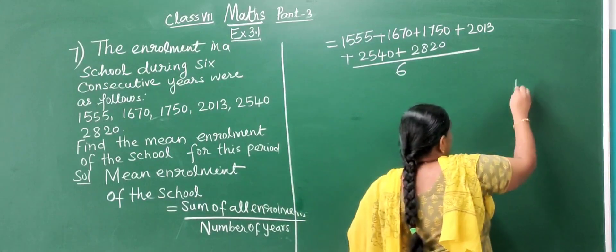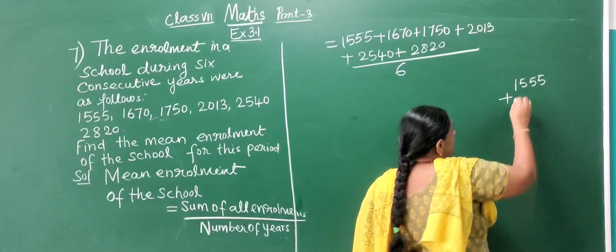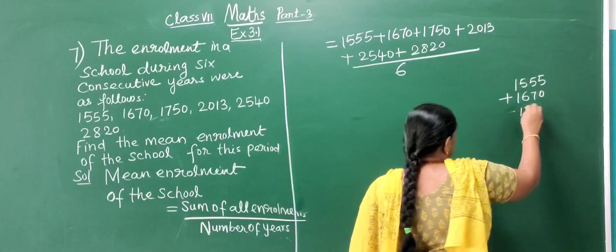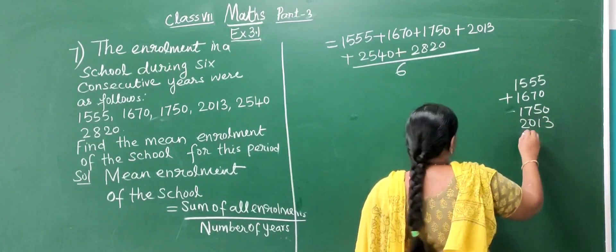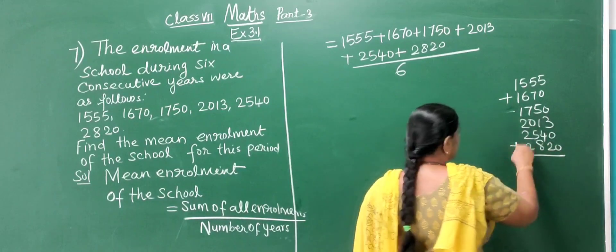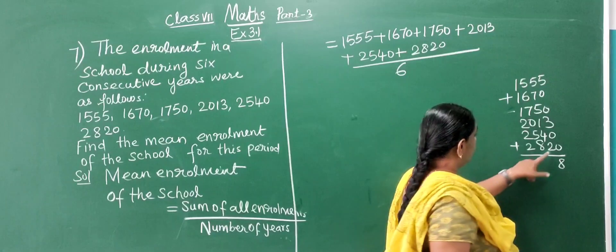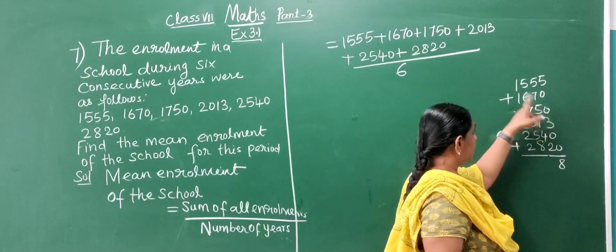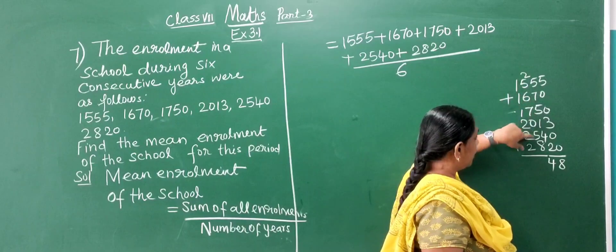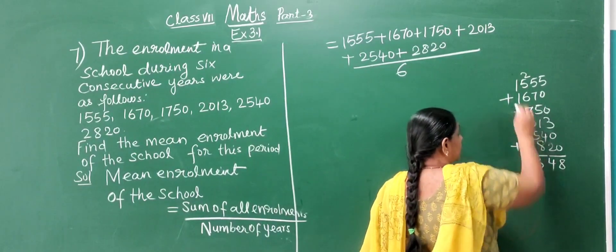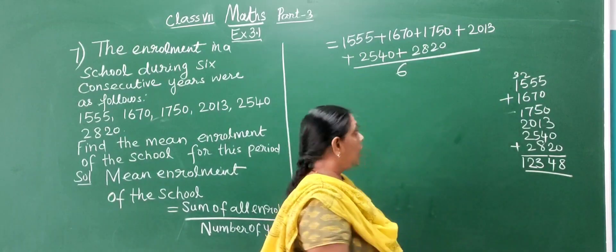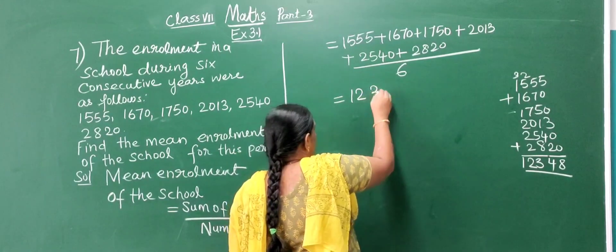Adding the numbers: 1,555 plus 1,670 plus 1,750 plus 2,013 plus 2,540 plus 2,820. The total comes to 12,348. So 12,348 divided by 6.